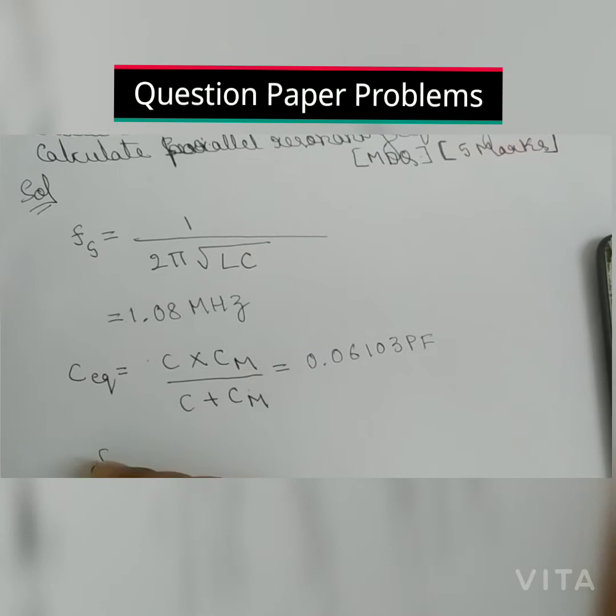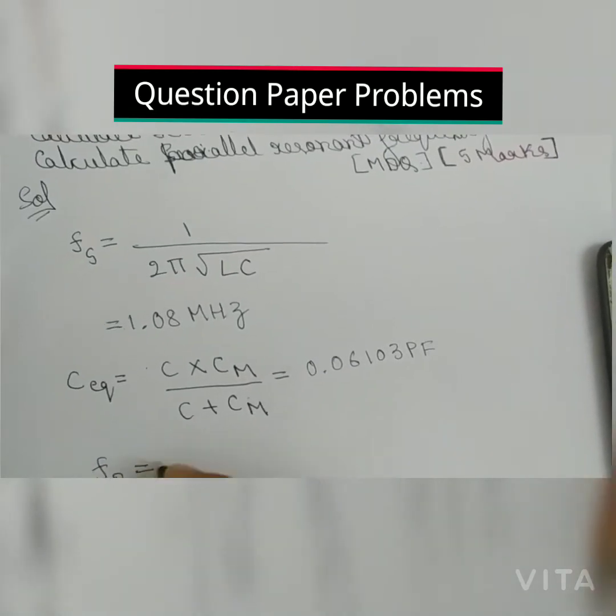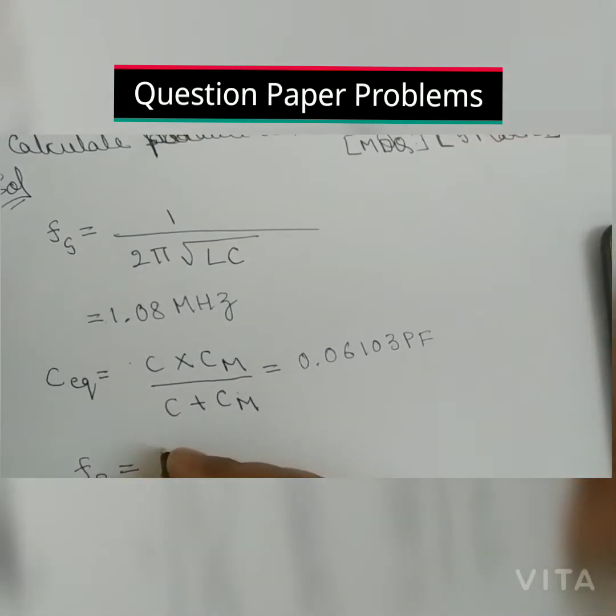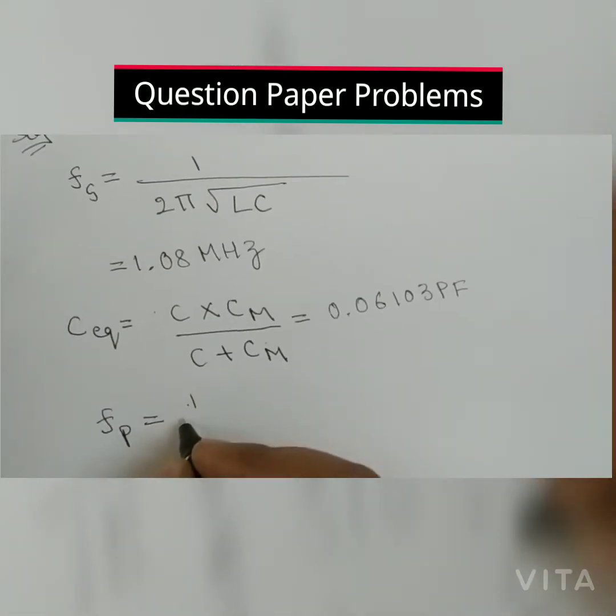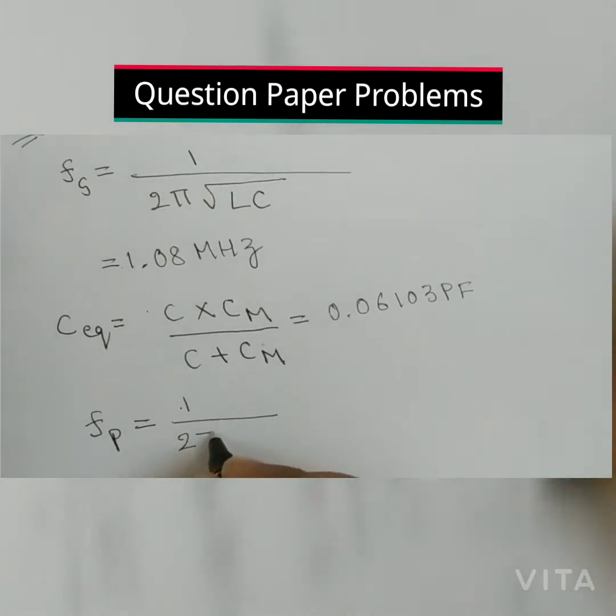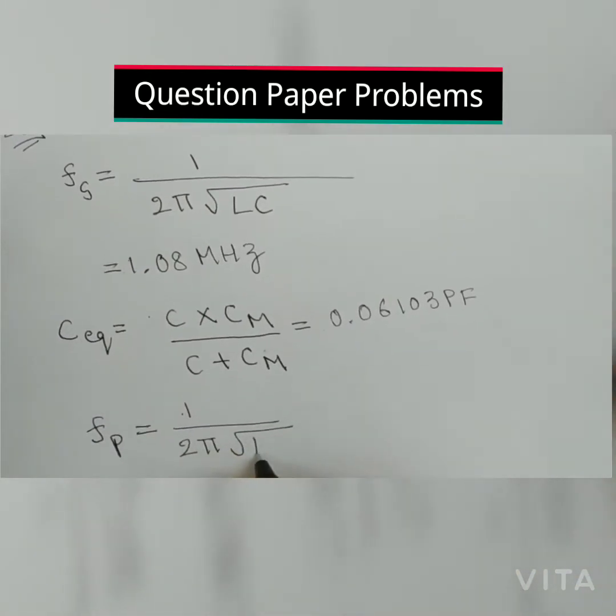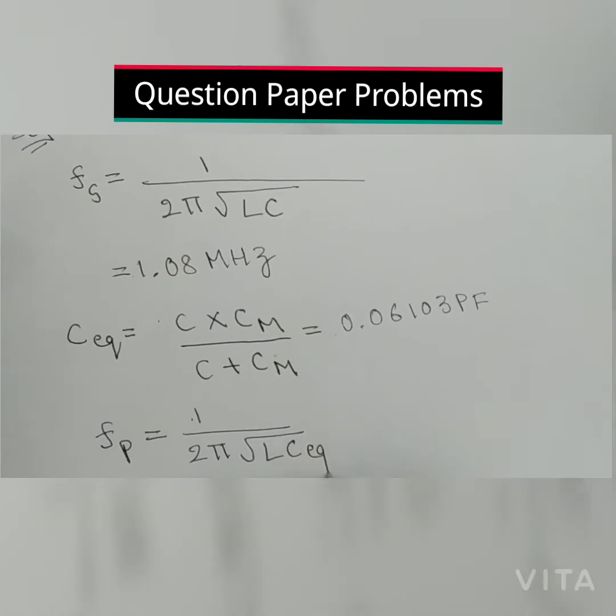Next Fp, that is parallel resonant frequency. Fp equals 1 divided by 2 pi square root of L times C equation.